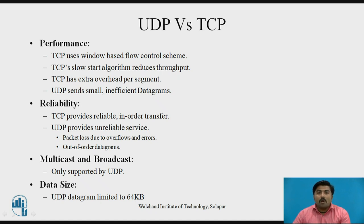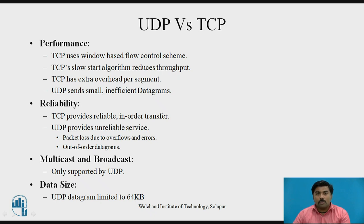UDP sends small and simple datagrams. In terms of reliability, TCP provides reliable and in-order transfer of data, whereas UDP provides unreliable service — packet loss due to overflow and errors, and out-of-order datagram delivery can occur because there is no flow control or in-order sequence provision. Multicast and broadcast are only supported by TCP. Regarding data size, a UDP datagram is limited to 64 KB.